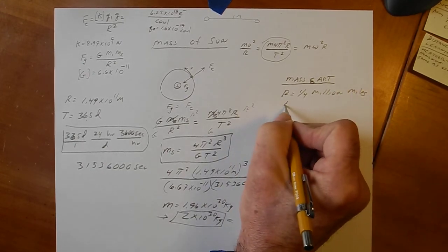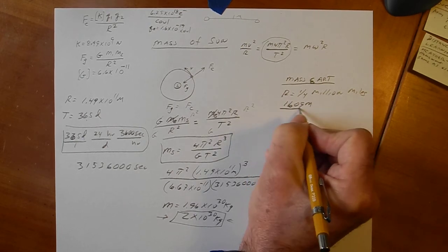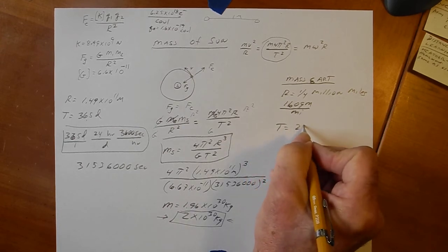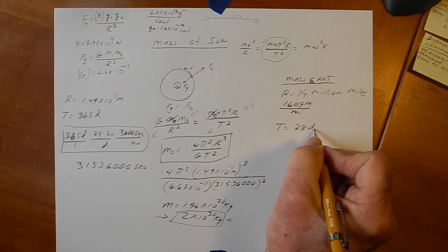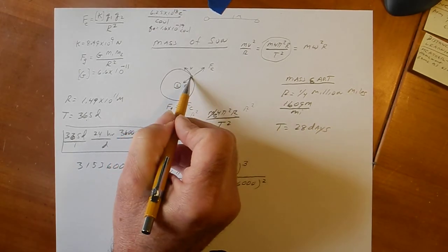Okay. And there's one point, let's see, 1609 meters per mile. And the time is 28 days. That's how long it takes the moon to orbit the earth. So, it looks very similar. Except you have the earth here and you have the moon there.